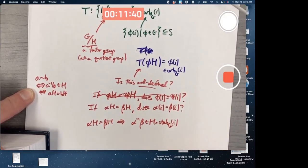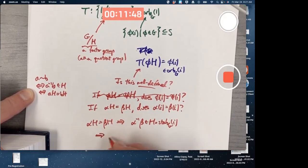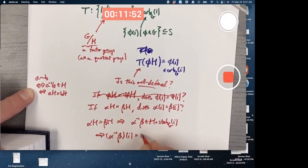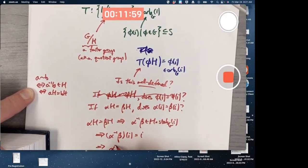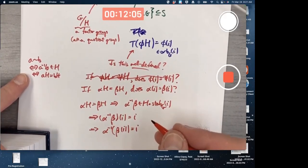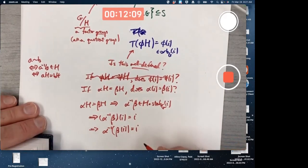But what does it mean to be in the stabilizer? I guess I'm trying to go through this now without looking at the book's proof. That implies that alpha inverse beta, that function, maps I to itself. Right? In other words, alpha inverse of beta of I equals I.